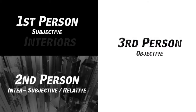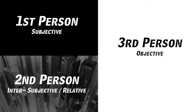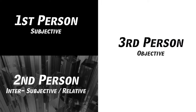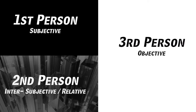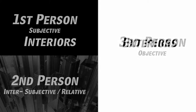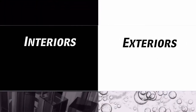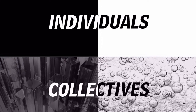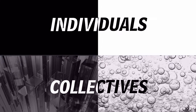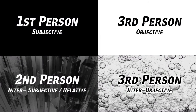It starts out with this understanding of interiors and exteriors, and that splits further into first person, second person, and third person distinctions or ways of talking. And that goes further still into a distinction of not just interiors and exteriors, but individuals and collectives. So now you have not just subjective and objective, but the intersubjective or the relative, and the interobjective, which has to do with systems theory.